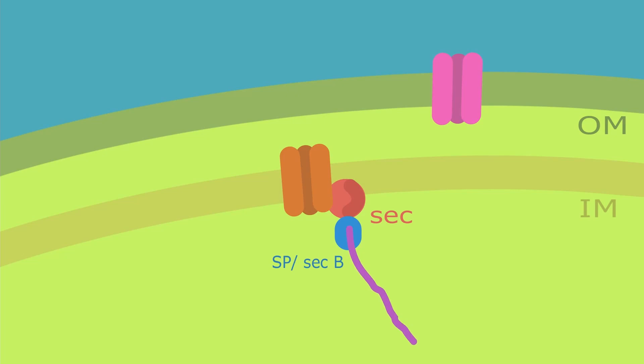The sec protein together with the sec B will allow the protein to go through the transport channel and enter the periplasmic space.